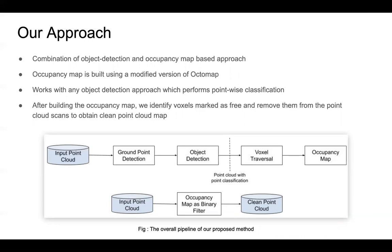After that, we use object detection to classify the remaining non-ground points into object and non-object points. After classifying the points, we perform voxel traversal to update the occupancy scores of the voxels. Finally, at the end of this process, we get the occupancy map. We apply the occupancy map on a set of new input point cloud data and remove the points which fall in the free space of the occupancy map.